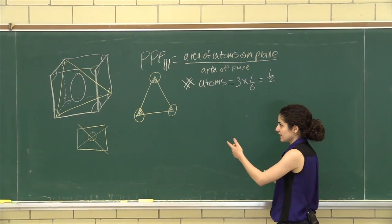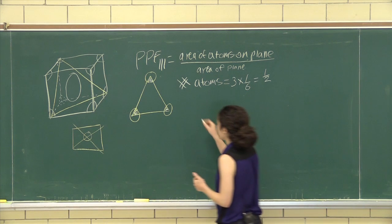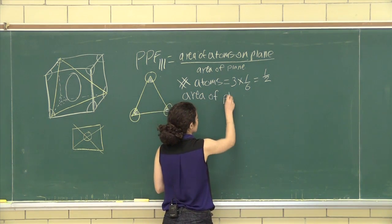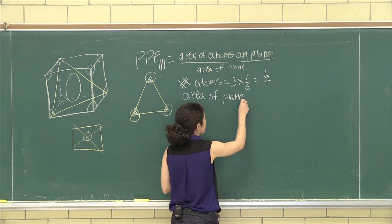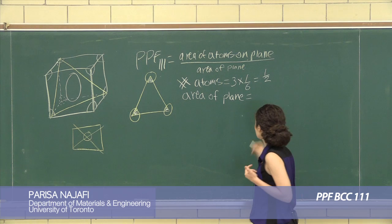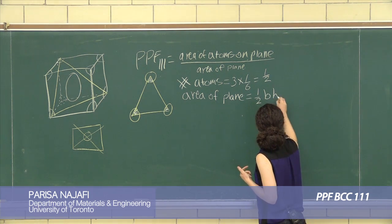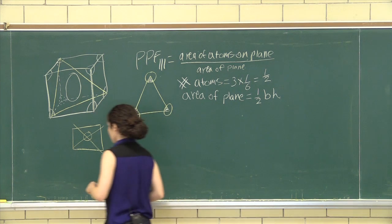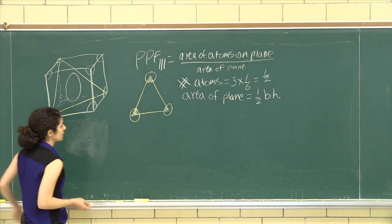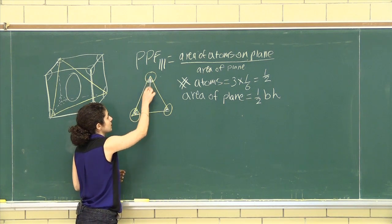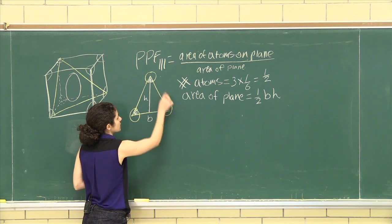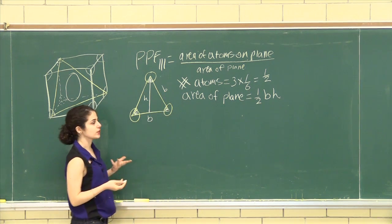So now we need to find the area of the plane. And for that, we know that it is a triangle, so it's half base times height. So this is our height. It goes down the middle. And this is our base. This is also our base because it is an equilateral triangle.